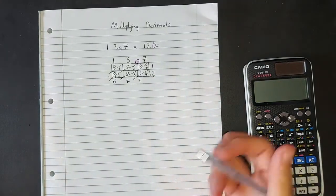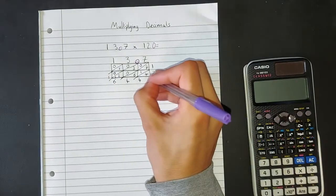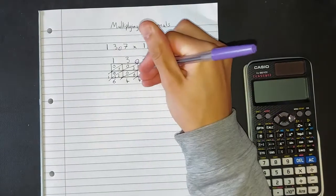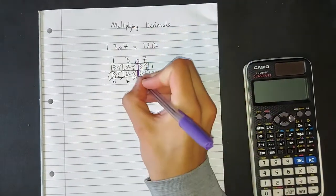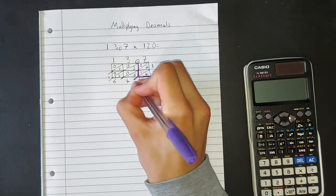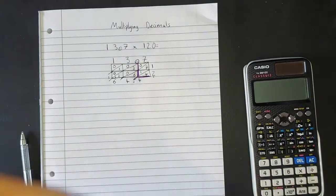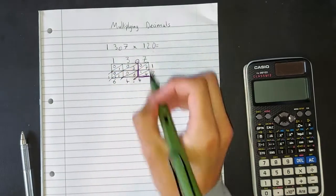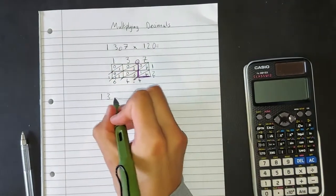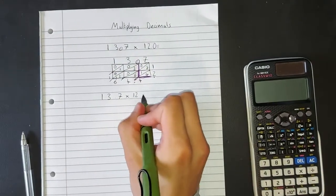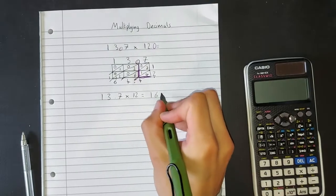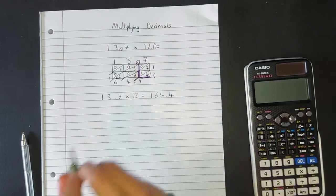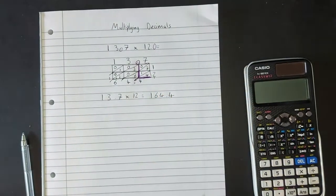Now, to work out where your decimal goes in your answer, you look at where these two meet. And then you follow that diagonal down. So the answer to this question, to 13.7 multiplied by 12, is 164.4. And that's how we know where the decimal is in our answer.